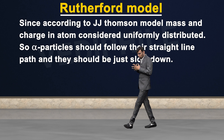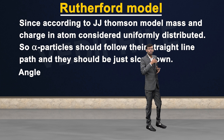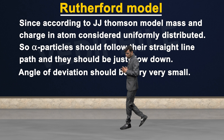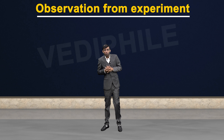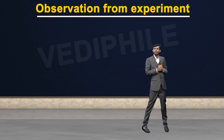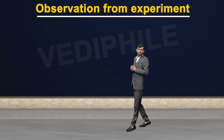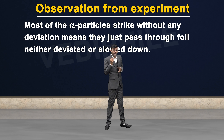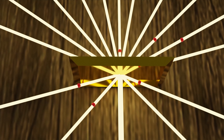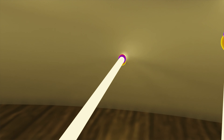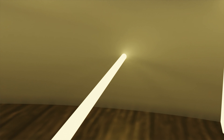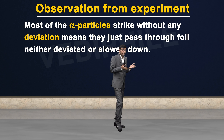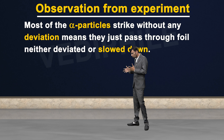But the observation from the experiment was completely different from the expectation. The first observation was that most of the alpha particles struck the fluorescent screen at the exact position — meaning there was no deviation in the path of most alpha particles. They went straight through — no deviation at all, and they were not even slowing down.